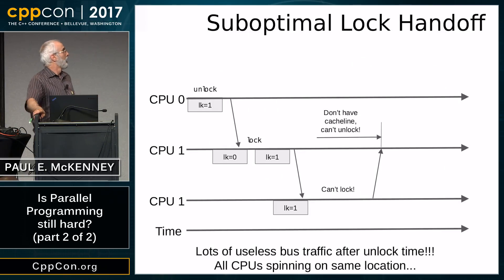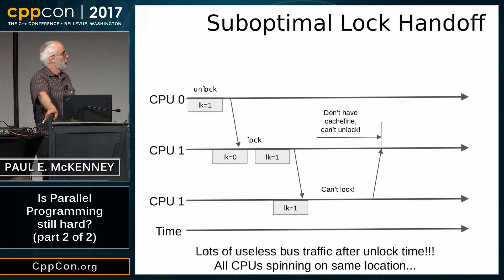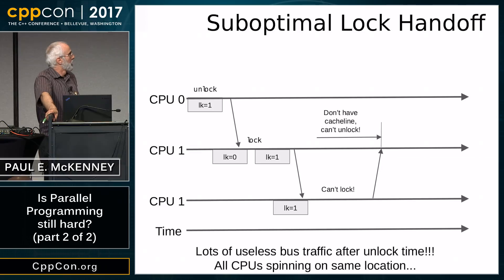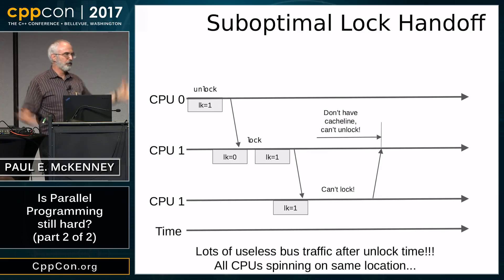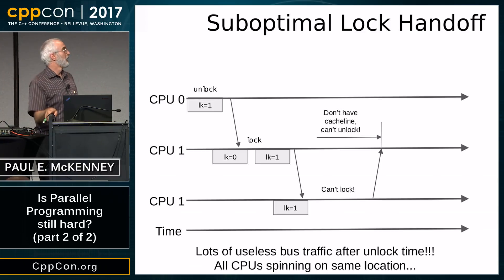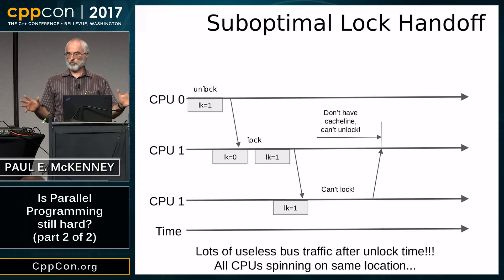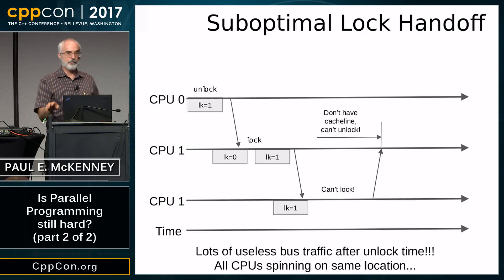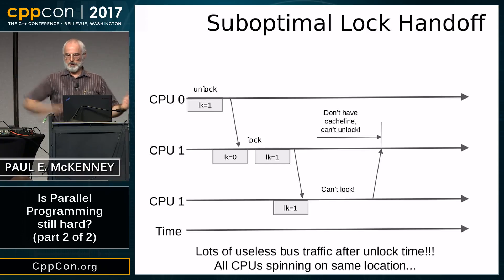This is still sub-optimal. When the lock is held, CPU1 has a read copy of the cache line, which means CPU0 can't release it until it gets exclusive ownership — because atomic read-modify-write must look atomic and everyone must agree on the value. When someone unlocks, there's a bunch of bus traffic to yank the cache line out from readers and get it to the releaser. The more CPUs spinning, the worse this gets.